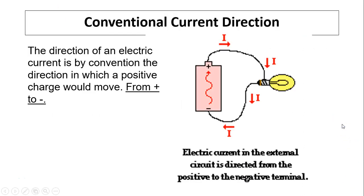Conventional current direction: The direction of electric current is, by convention, the direction in which a positive charge would move—from positive to negative. So outside of the external circuit, positive charge is naturally repelled by the positive side, so it comes through, does all the work, then goes back.